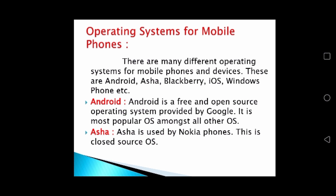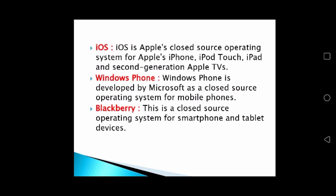Next is ASHA, which is used by Nokia phones. This is a closed source OS, not freely available in the market. Next is iOS. iOS is Apple's closed source operating system for Apple's iPhone, iPod Touch, iPad, and second generation Apple TVs. This operating system is installed in Apple's devices and is closed source software, not freely available in the market.